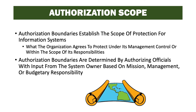Authorization boundaries are determined by authorizing officials with input from the system owner based on mission, management, and budgetary responsibilities. The ultimate responsibility for this task is the authorizing official, who will validate that the authorization boundary and authorization scope is correct. Input from the business owner and system owner is critical. The boundary should include things that are covered by and influenced by the system owner, since it's hard to implement controls in areas you don't control.